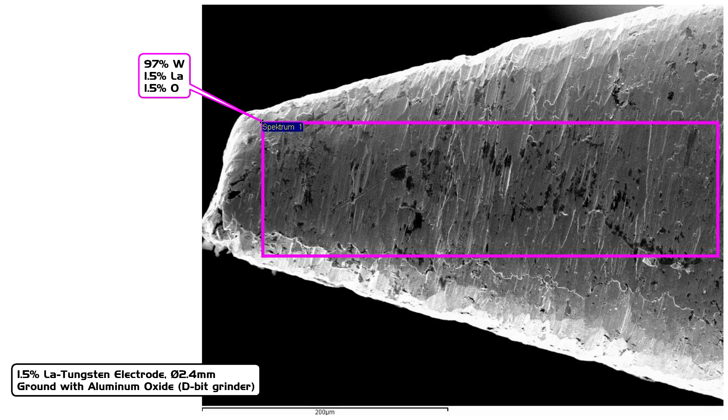The dark spots on the surface, however, may just as well be oxides of tungsten, caused by the local grinding heat.